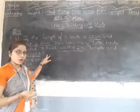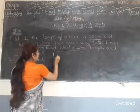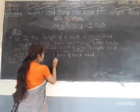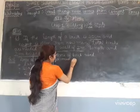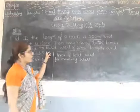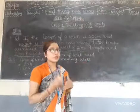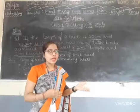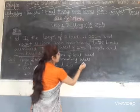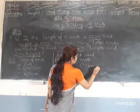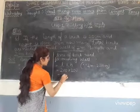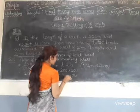Now we have to find the area of the wall. We have to convert it into cm — 1 m is equal to 100 cm, so 2 m is equal to 200 cm. Therefore, area of wall equals 200 into 200 cm, that means 40,000 cm².